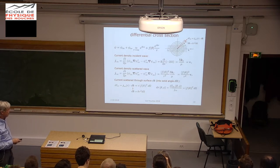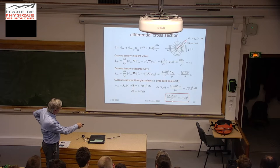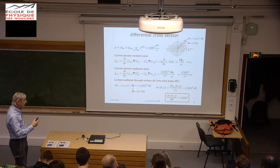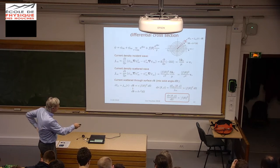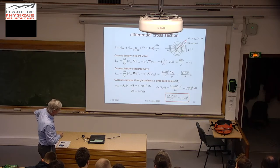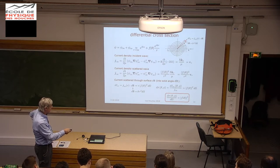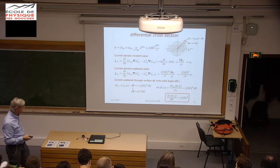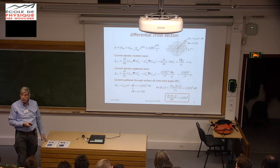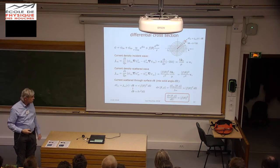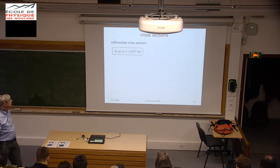The differential cross-section dσ/dΩ equals |f(θ)|². It gives you the probability that a particle scatters in the direction theta—the amplitude squared gives the probability. This is called the differential cross-section.